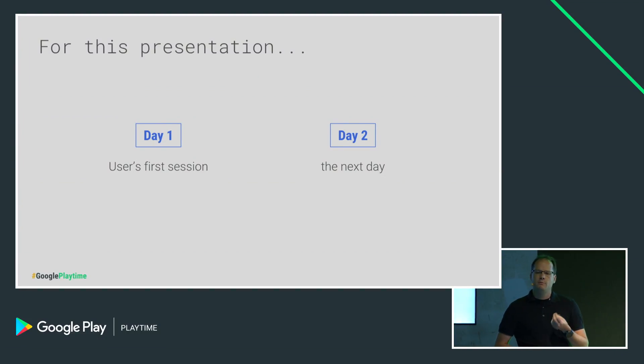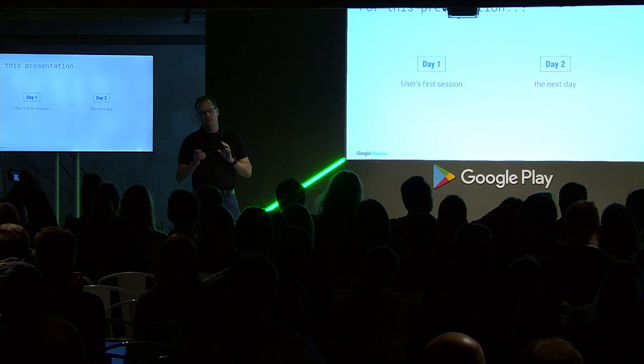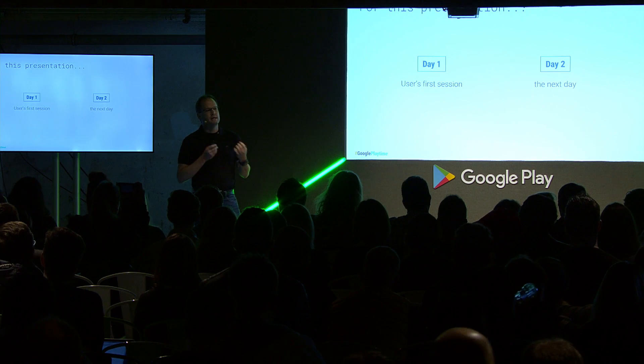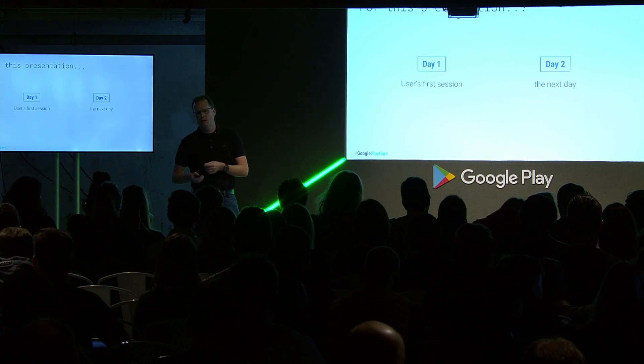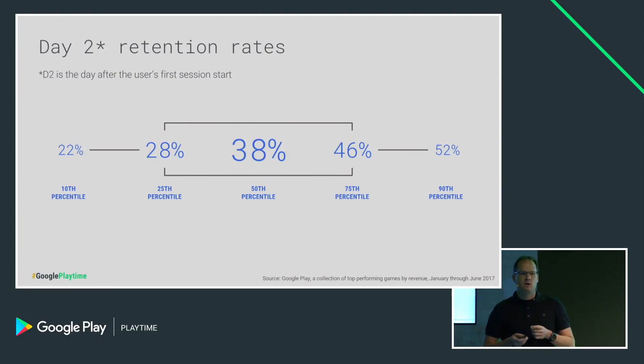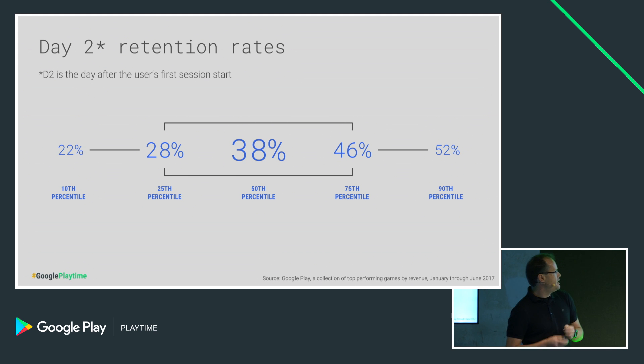One note for this presentation: I'm going to call day one retention as the day of the user's first session start, and day two as the next day. I know many of you tend to use retention as base zero, so if you're used to that nomenclature, just subtract one from each date. To give you some benchmarks, day two retention across the top couple hundred apps on Play — 38% is the median value, a good target to shoot for. But if you really want to be in the top decile, shoot for a day two retention of about 52%.